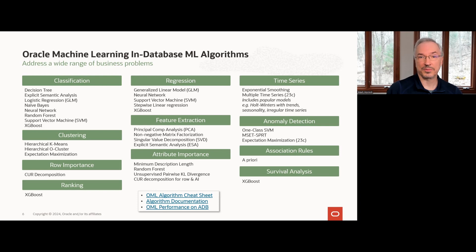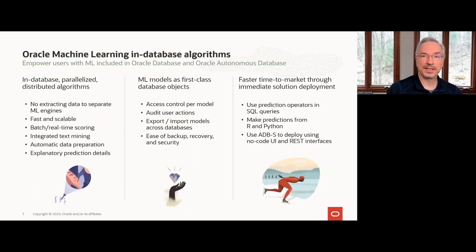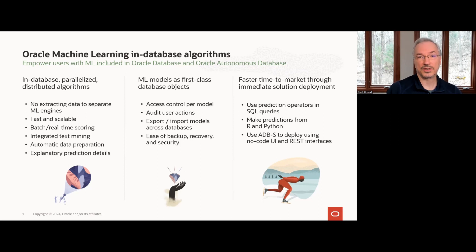So what's special about these algorithms? The in-database parallelized algorithms keep data under database control. There's no need to extract data to separate machine learning engines, which can be time-consuming and affect scalability and data security. The algorithms enable batch and real-time scoring and provide explanatory prediction details so you can understand why an individual prediction is made. It's often not enough to know if a customer will churn — you need to know what factors most contribute to such a prediction. In-database machine learning models are first-class objects in your database schema, and you can control access by granting and revoking permissions, auditing user actions, and exporting and importing machine learning models across databases.